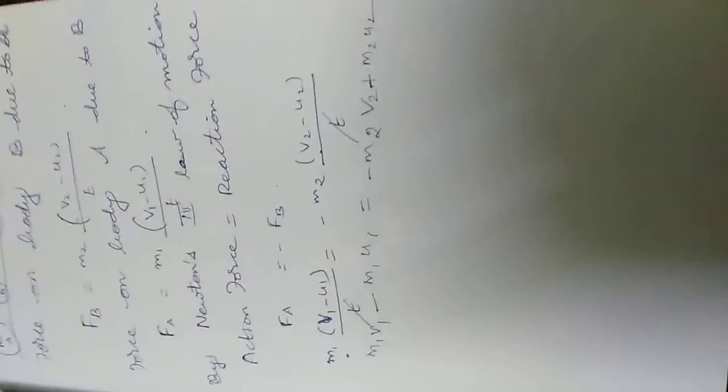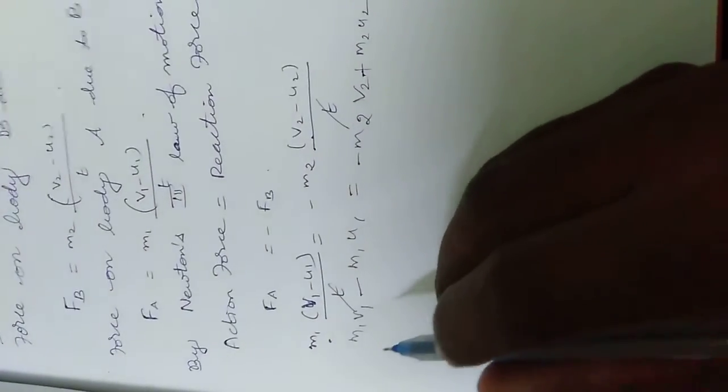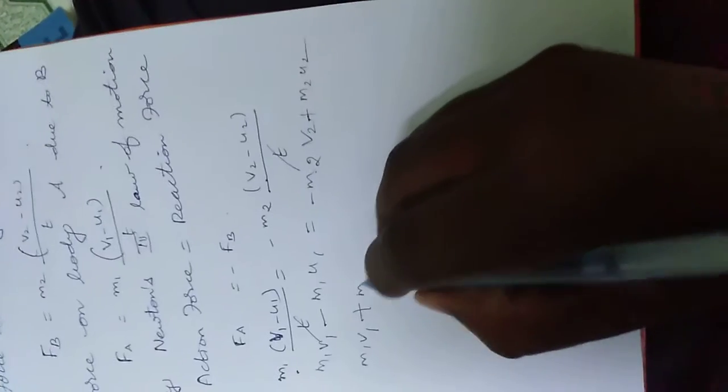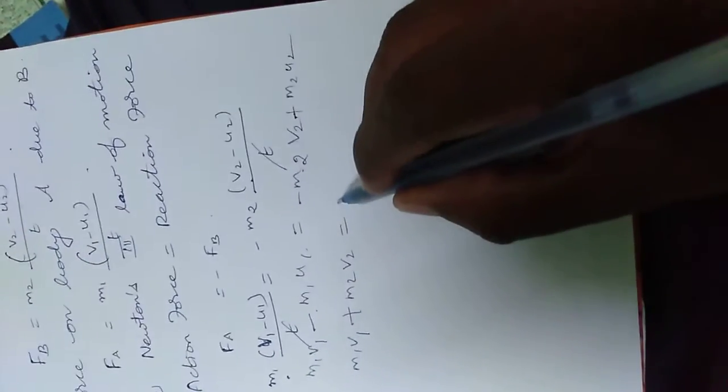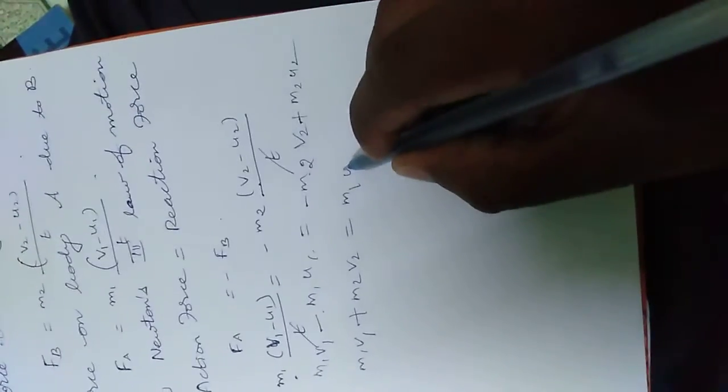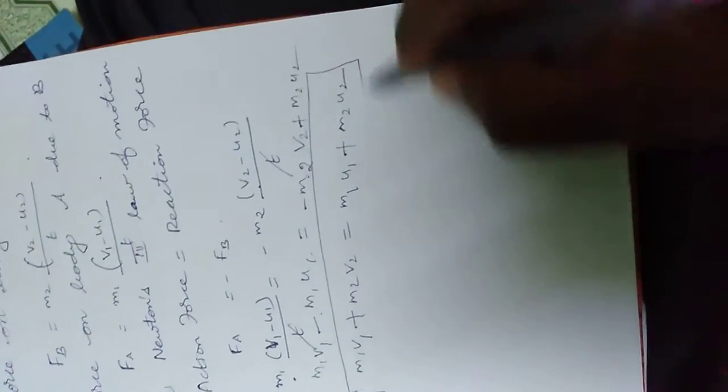Now change the equation. Move the V terms to the left-hand side. M1V1 plus M2V2 is equal to M1U1 plus M2U2. This is the final answer.